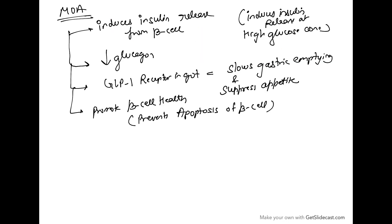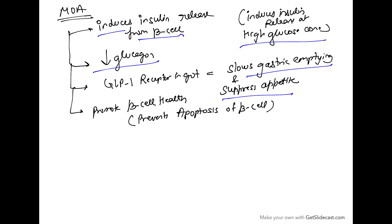So to summarize the mechanism of action: it induces insulin release from the beta cell — importantly, it induces insulin release only at high glucose concentration. Second, it decreases glucagon levels. Third, GLP-1 receptors in the gut slow gastric emptying and suppress appetite as well. Another important action is it promotes beta cell health by preventing apoptosis of beta cells.